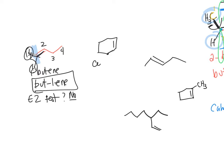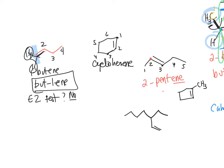A six-carbon ring with a double bond is cyclohexene — you don't need a number because everyone knows to start at one and go through the double bond. For a five-carbon chain with the double bond at carbon two, the base name is pentane, so it becomes pent-2-ene. Doing the cis/trans test: one side has CH3 versus H (carbon is higher priority, so that's number one) and the other side has CH2CH3 versus H (again, carbon is higher priority).